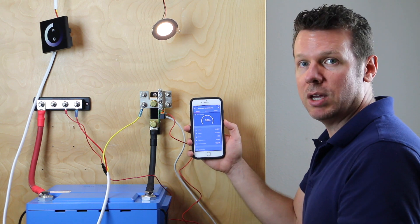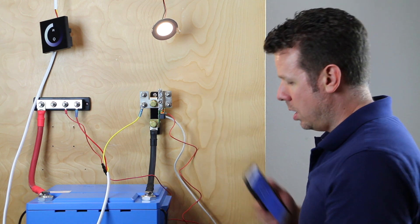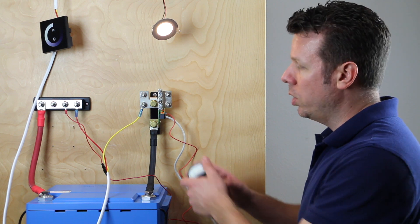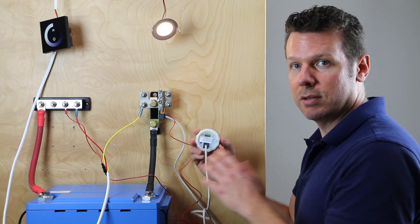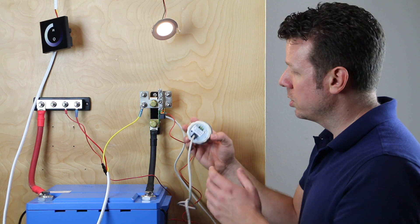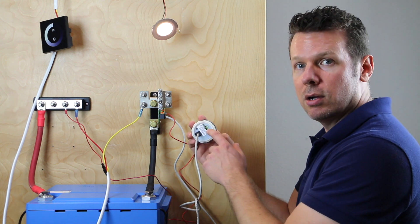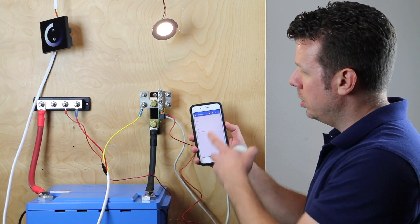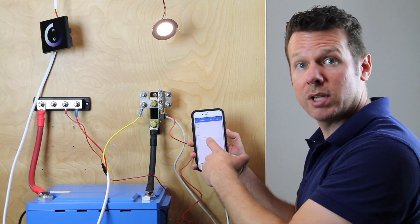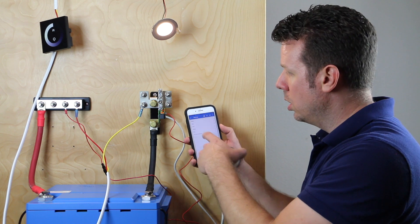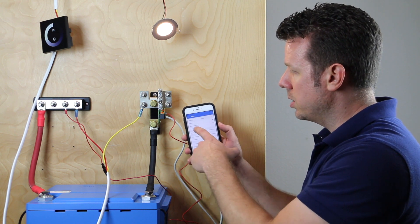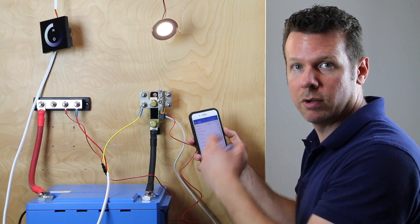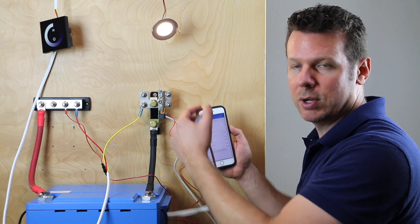But that is the gist of the BMV 712. The smart shunt is going to have essentially the same capabilities. One thing the BMV 712 has, it's a feature I honestly never use, but it has a relay here and you can program it with the app.